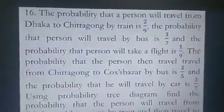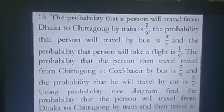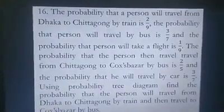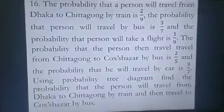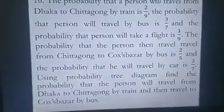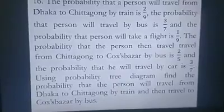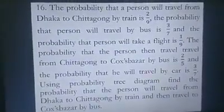Now let us move to problem 16. The probability that a person will travel from Dhaka to Chittagong by train is two-ninths, by bus is three-sevenths, and by flight is one-ninth. There are three options to go from Dhaka to Chittagong. The probability that the person then travels from Chittagong to Cox's Bazar by bus is two-fifths and by car is three-sevenths. Using a probability tree diagram, find the probability that the person travels from Dhaka to Chittagong by train and then to Cox's Bazar by bus.